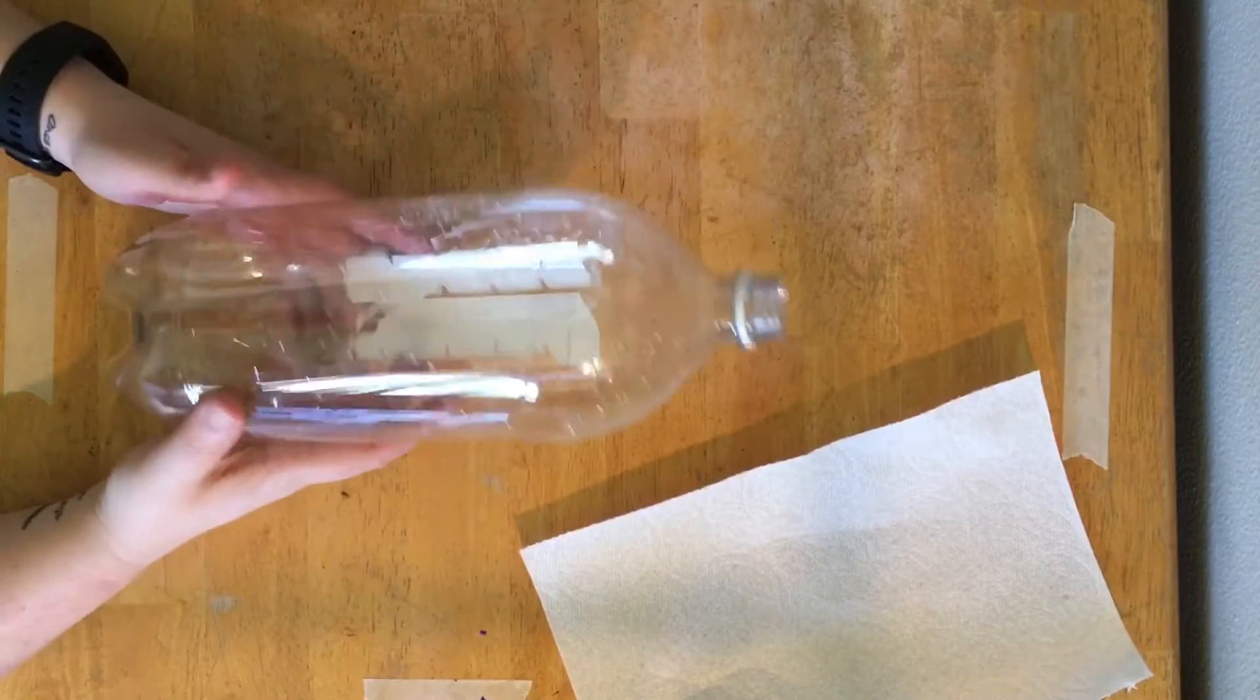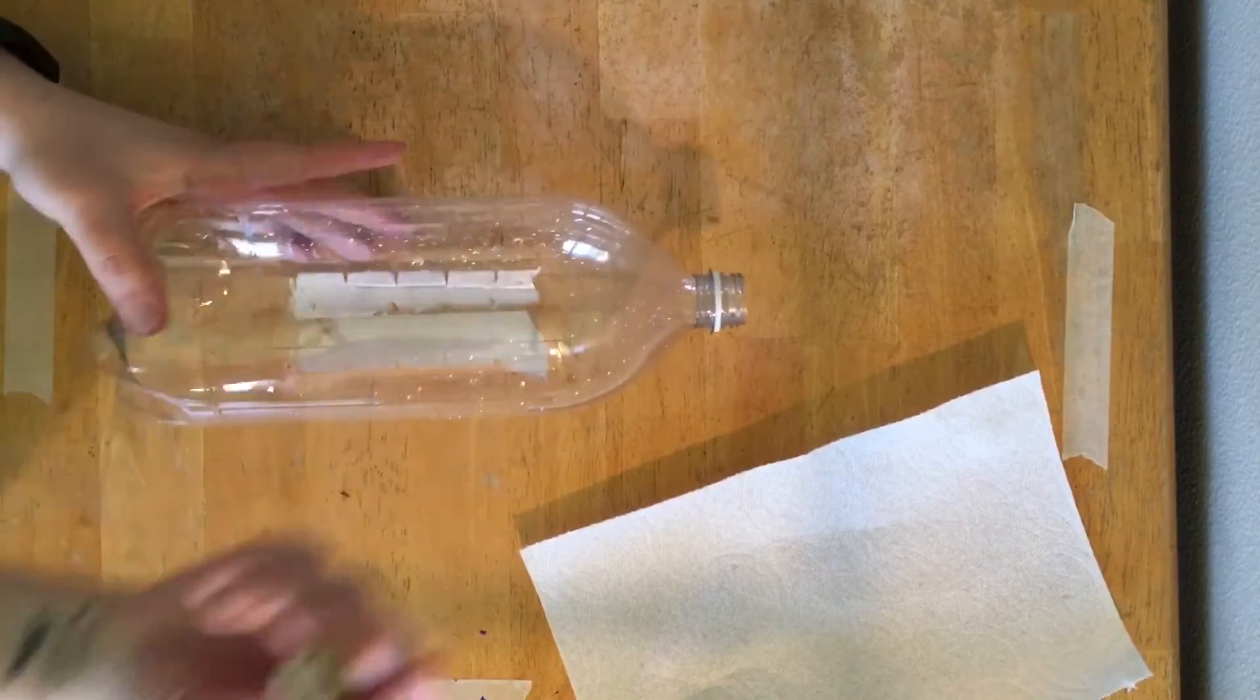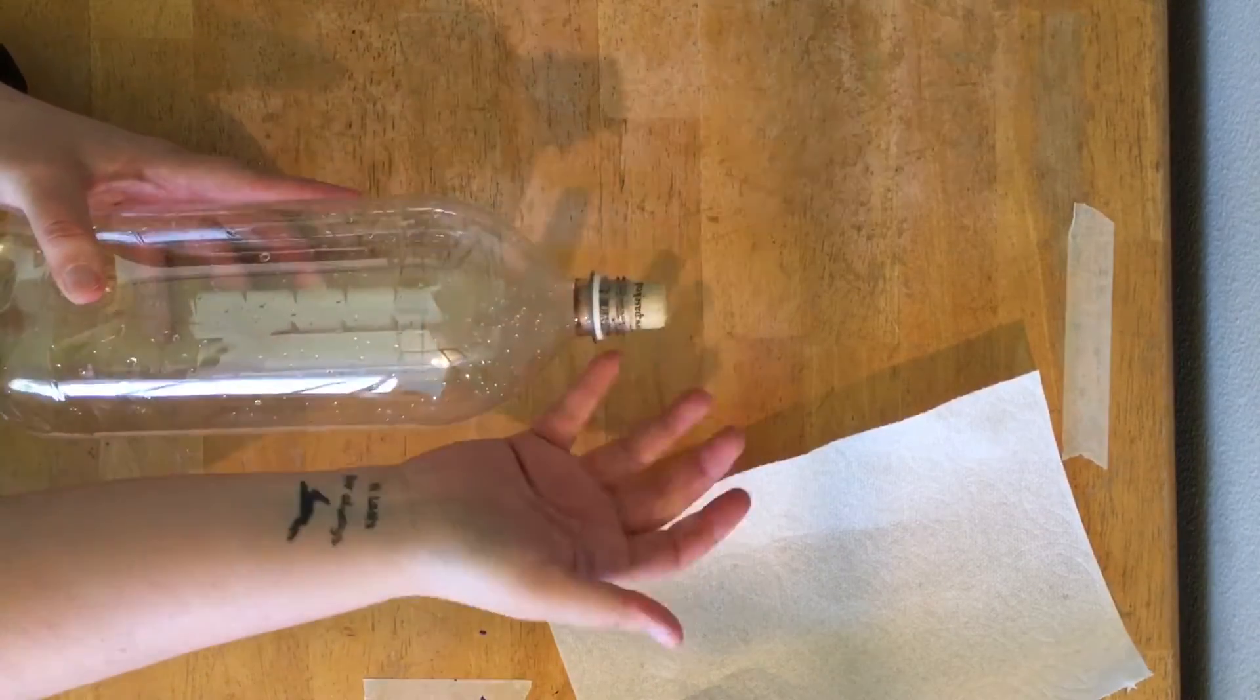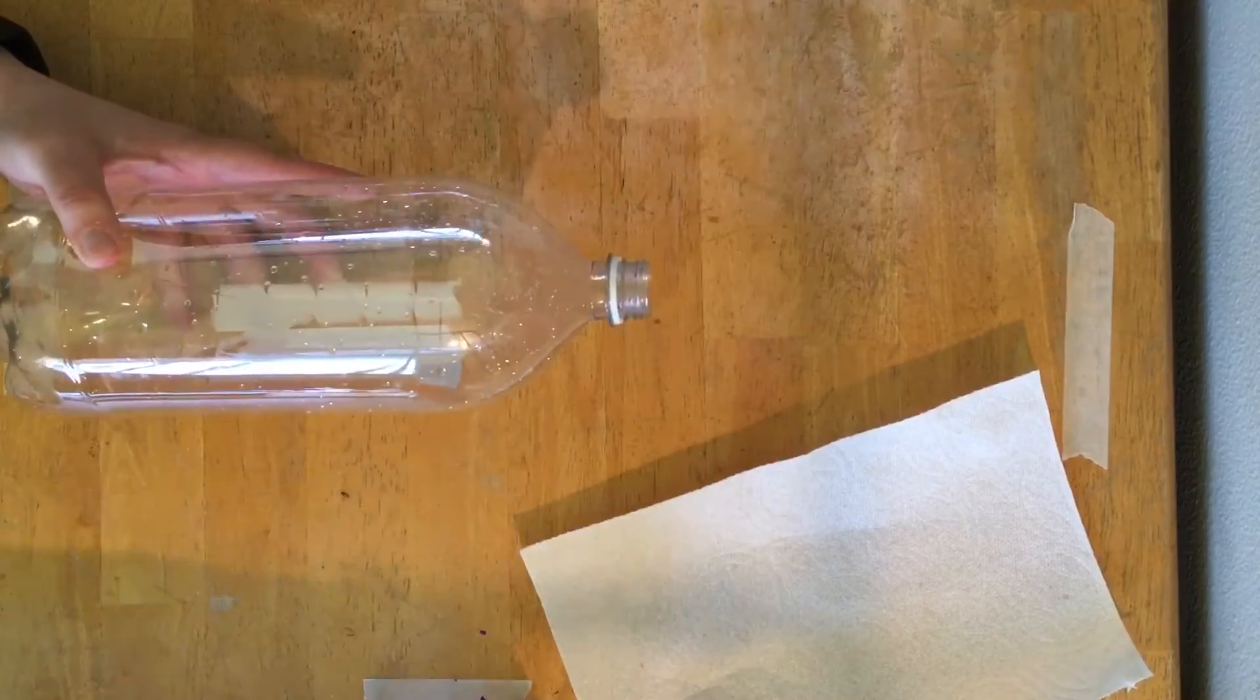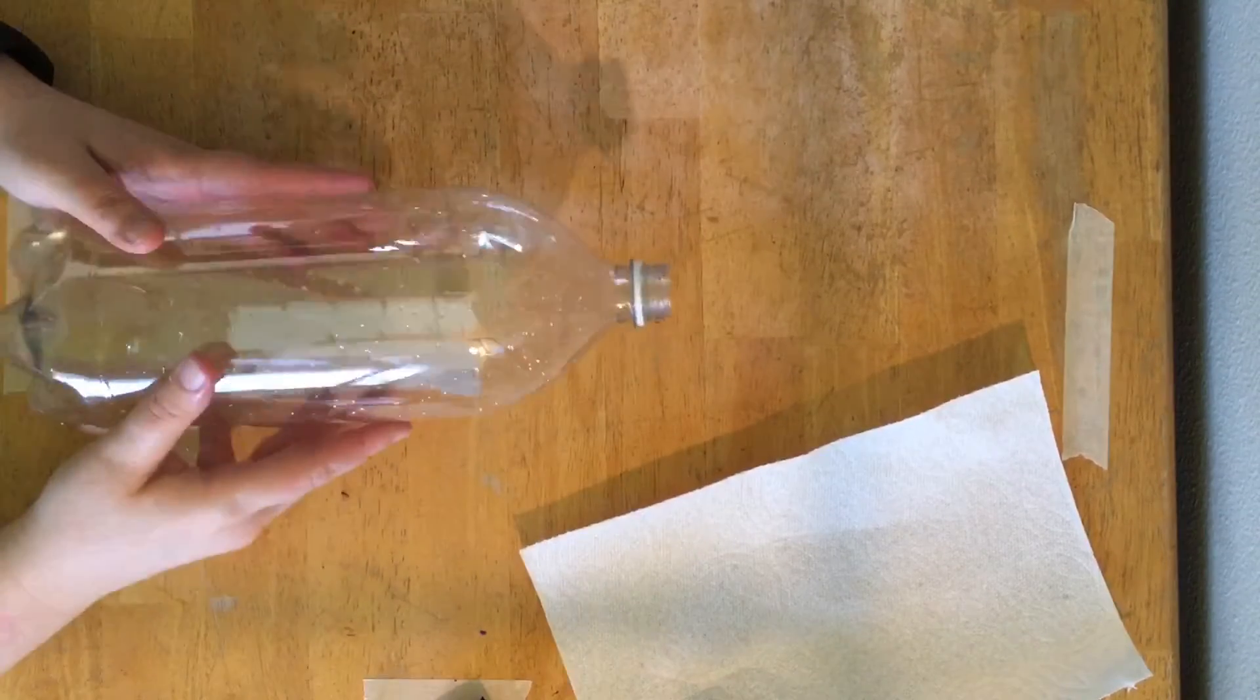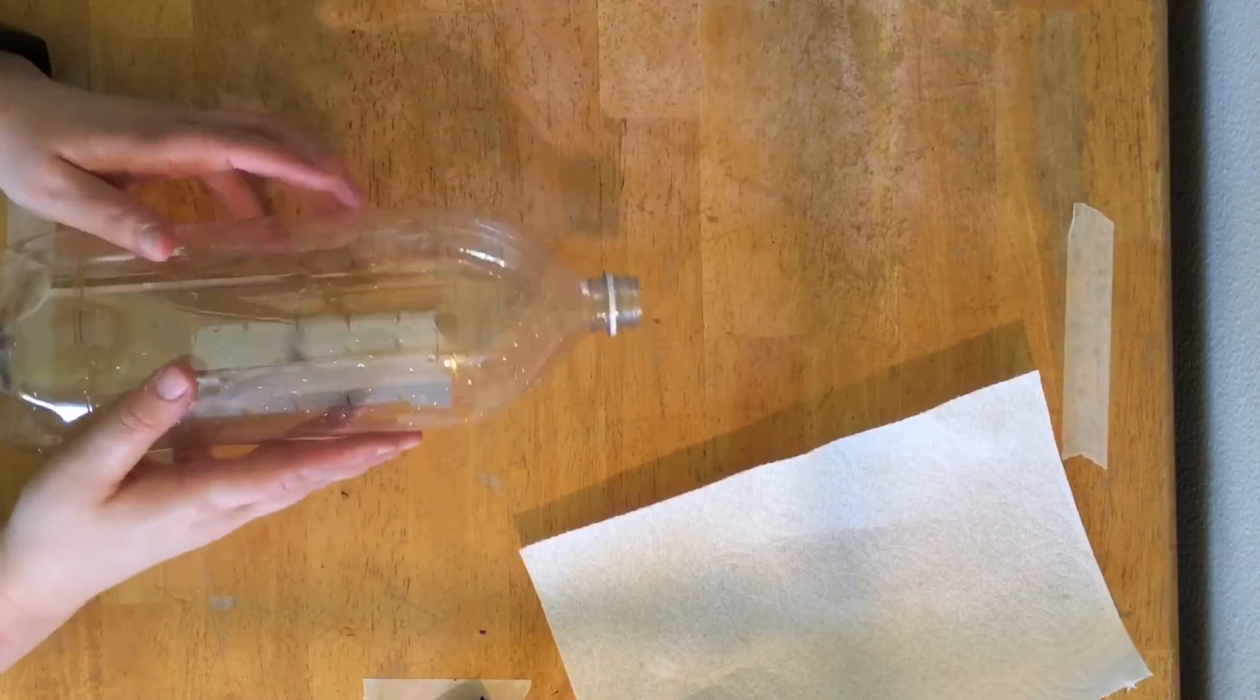So first thing you're going to need is a two-liter bottle and you need a cork that's going to fit snugly inside the end of that. Mine doesn't fit super hard to get out, but you can see it does fit in there. I did test it with some water to make sure it doesn't leak.